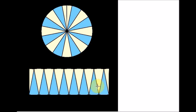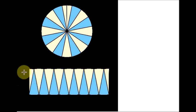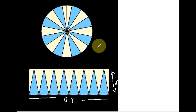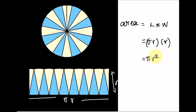The rectangle has length equal to pi r and breadth equal to r, so the area is pi r times r, which equals pi r squared. The area of the rectangle equals the area of the circle. We started with the area of a rectangle and ended with the area formula for a circle.